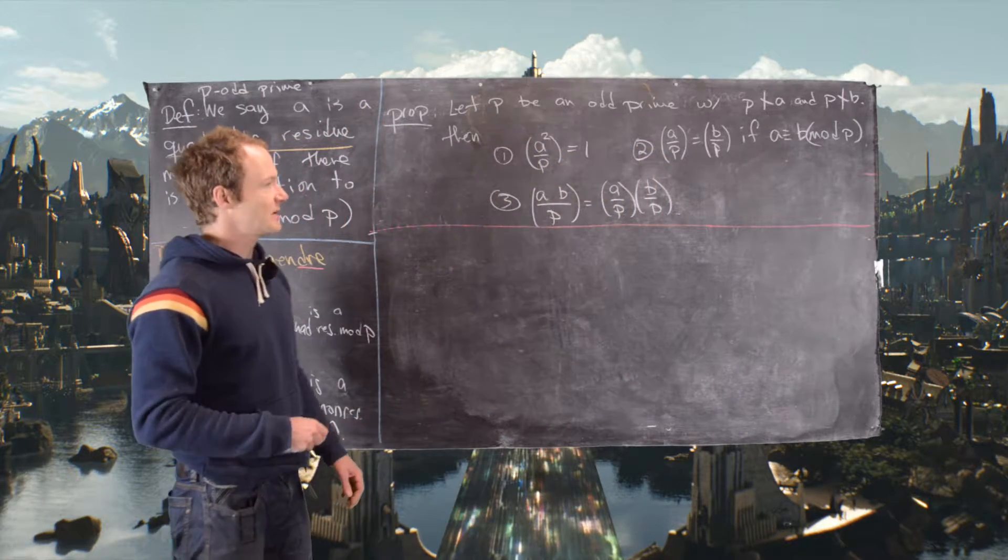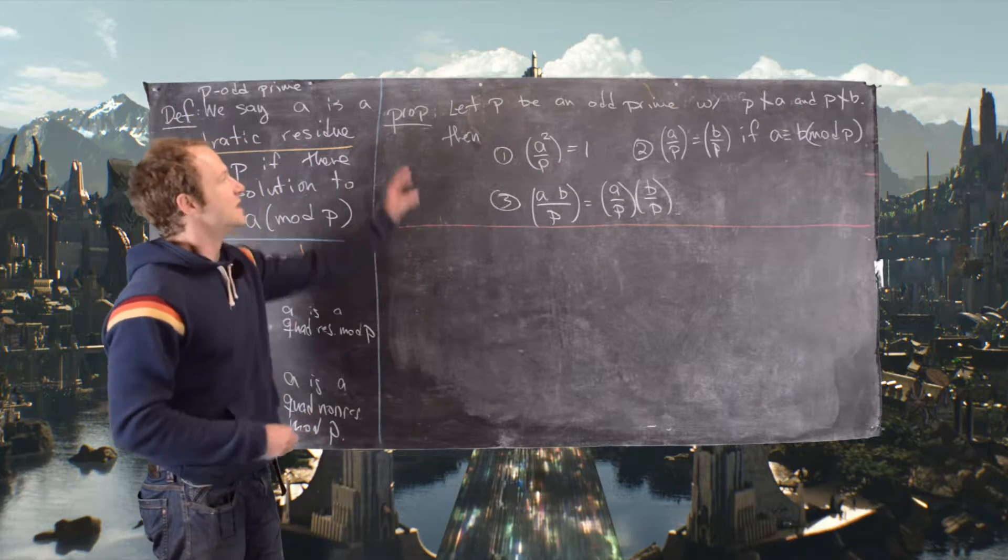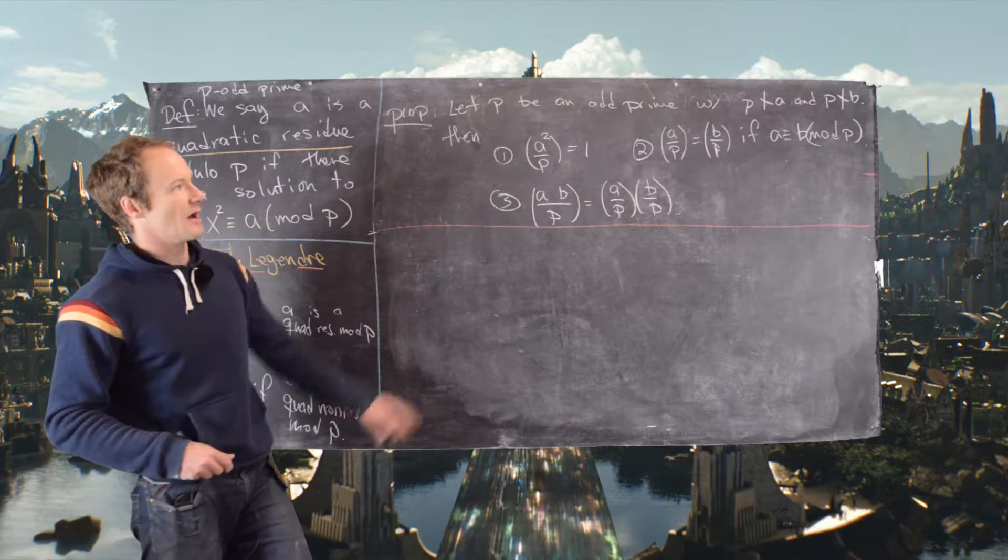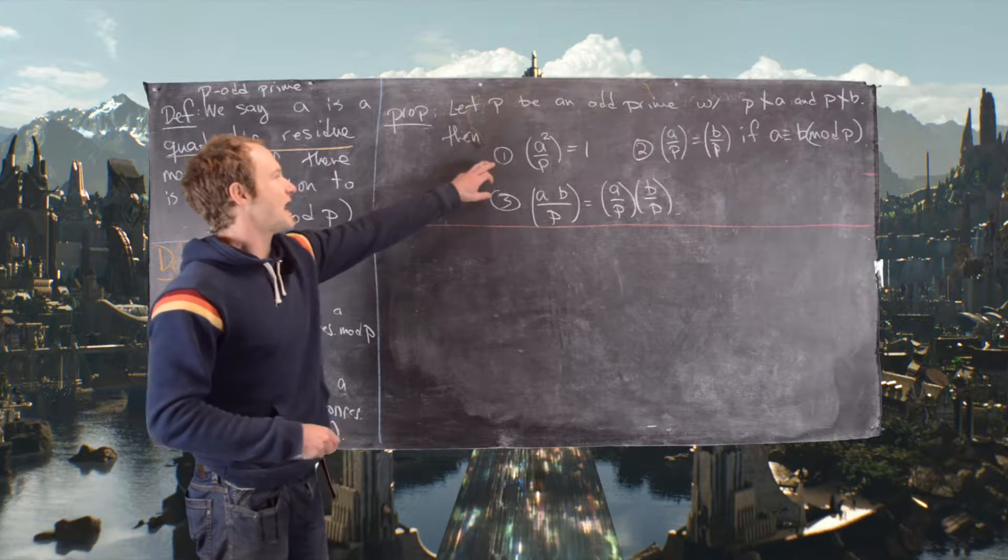So now we have this proposition. I'll really just focus on the third bit, but we'll go over all of it. Let's say p is an odd prime, p does not divide a and it does not divide b. Then we have the following.